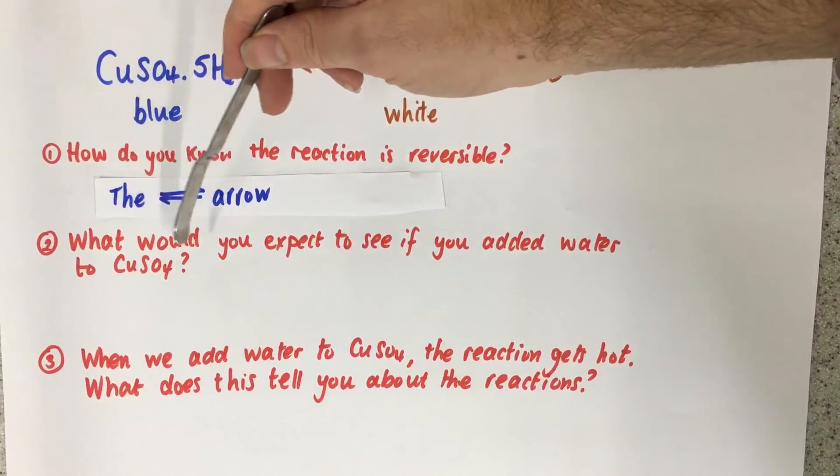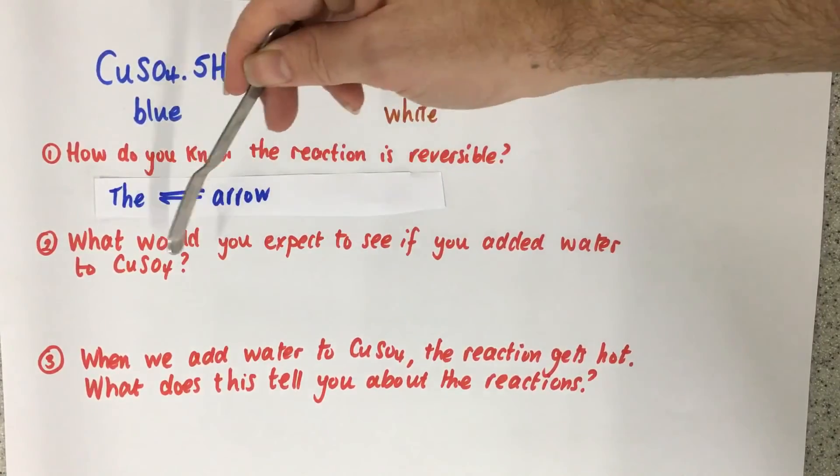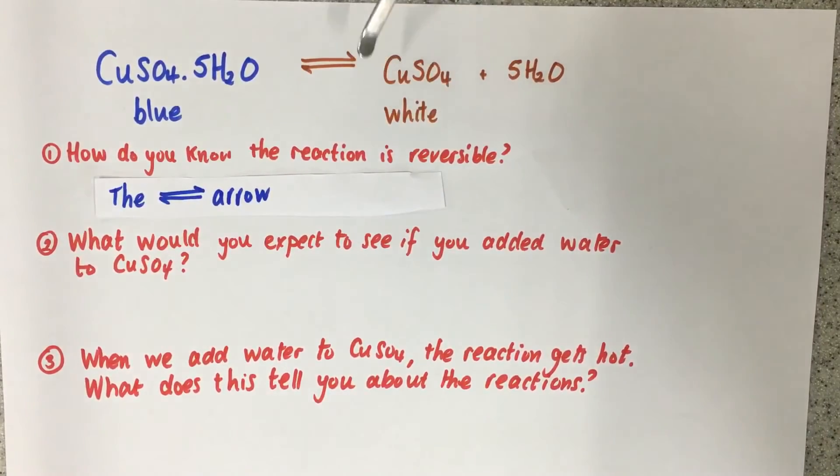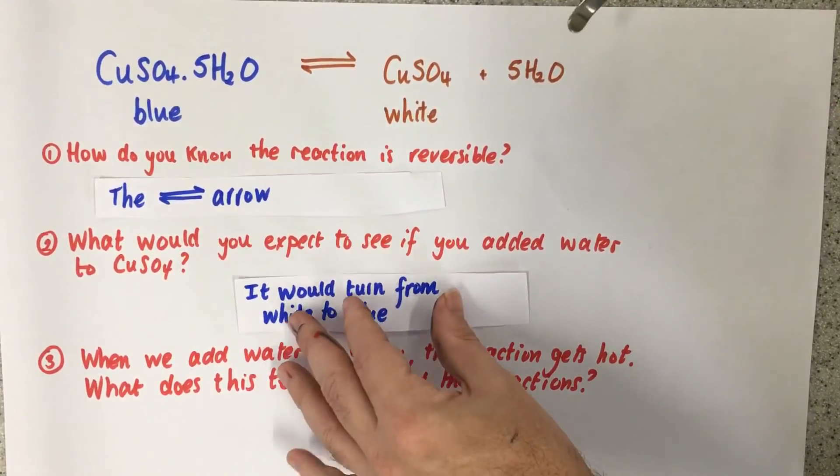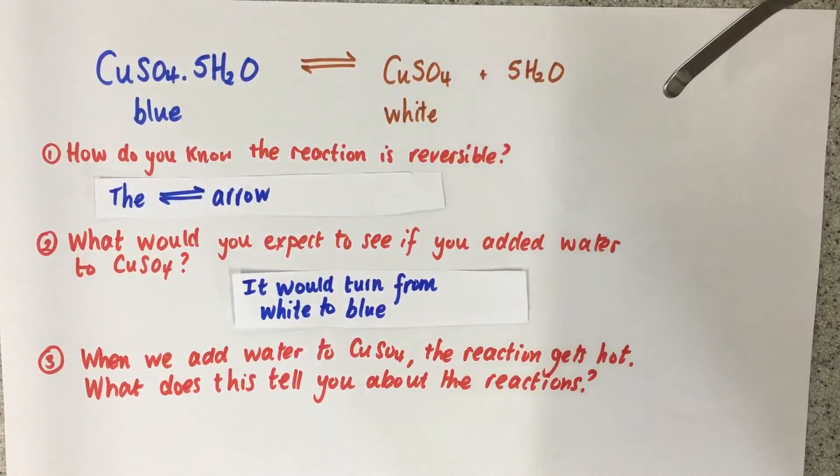Question two, what would you expect to see if you added water to the white anhydrous copper sulfate? Well, we know if we add water to white anhydrous copper sulfate, it becomes hydrated blue copper sulfate. So it would go from white to blue.